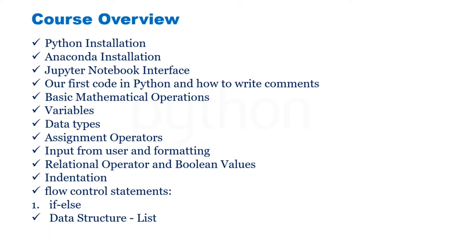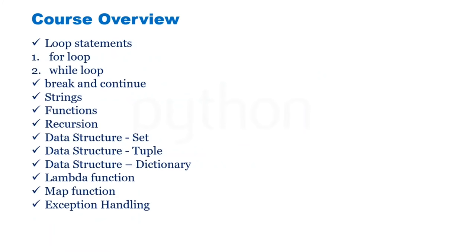Then we will also learn about flow control statements, which are if and else. After this, we will learn about our first data structure, which is list. Then we will learn about loop statements, which are for loop and while loop. After while loop, we will learn about break and continue, and after break and continue, we will learn about strings and then functions.